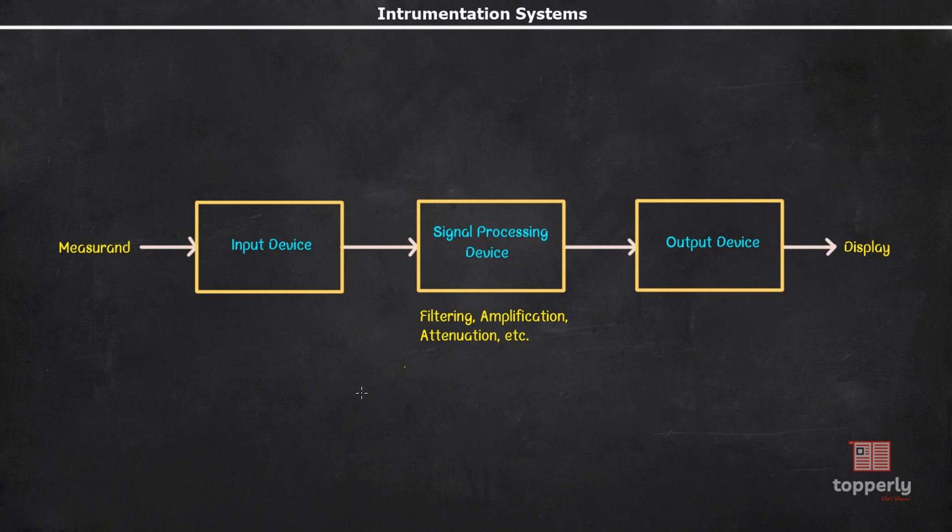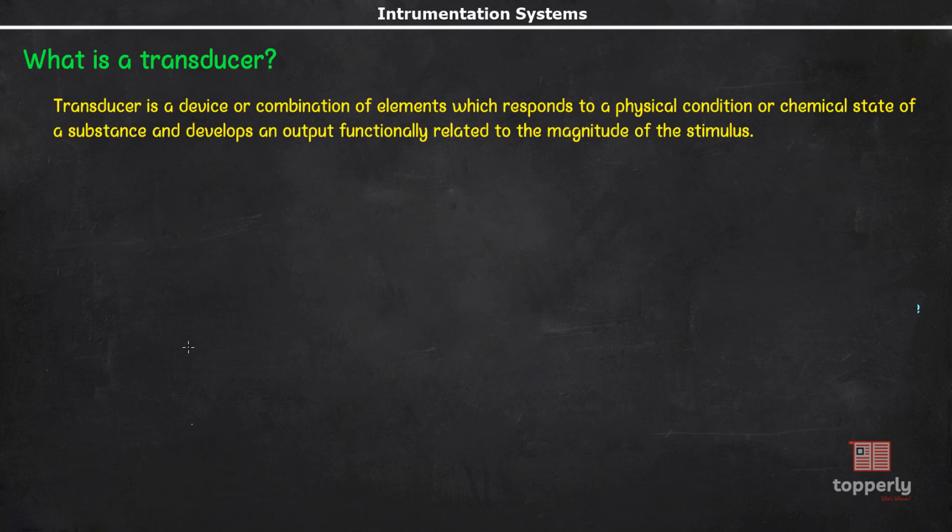Now comes the question, what is a transducer? A transducer is a device or combination of elements which responds to a physical condition or chemical state of a substance and develops an output functionally related to the magnitude of the stimulus. In other words, a transducer is a device that converts energy from one form to another form.